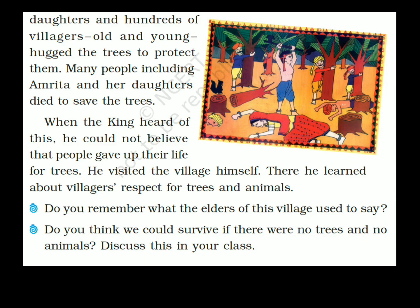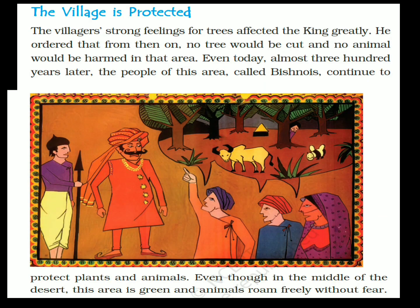When the king heard of this, he visited the village himself and learned about the villagers' respect for trees and animals. The villagers' strong feeling for trees affected the king greatly. He ordered that from then on, no tree would be cut and no animal would be harmed in that area. Even today, almost 300 years later, the people of this area called Bishnois continue to protect plants and animals, and even in the middle of the desert, this area is green and animals roam freely without fear.